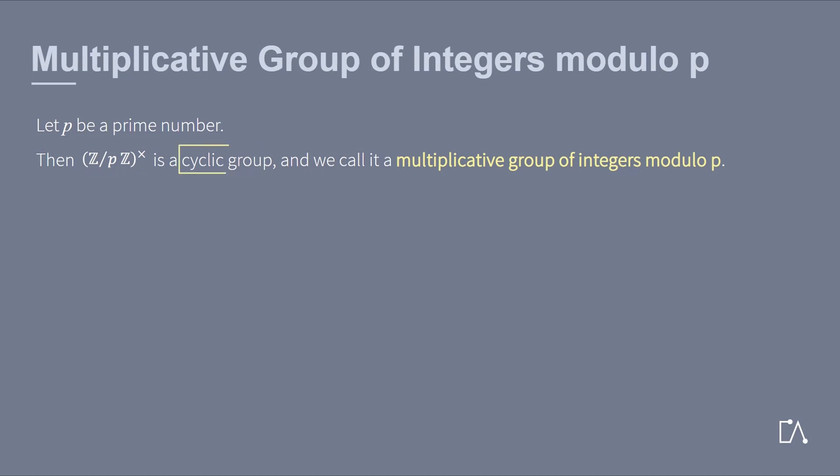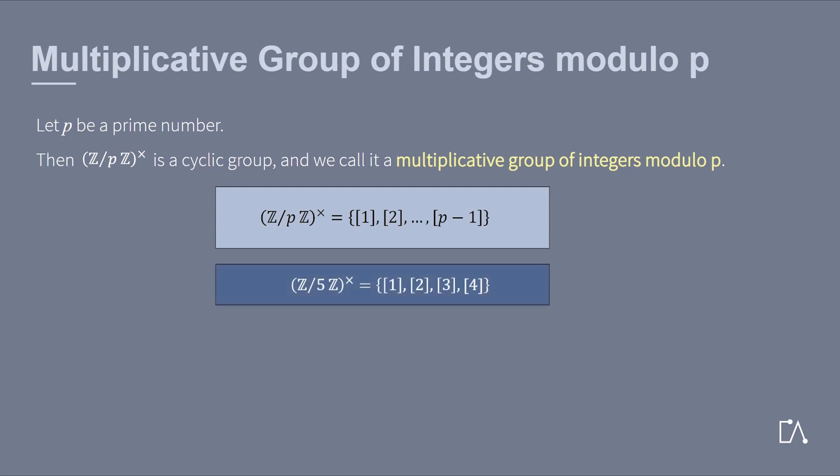In particular, it is a cyclic group. So, what does this mean? The elements of this group are the residue classes from 1 up to p minus 1. If you are unsure about residue classes, have a look at the glossary. For instance, for p equal to 5, it looks the following way.